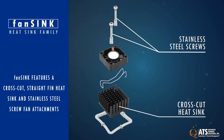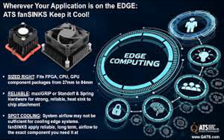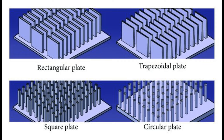Thermal management often involves the integration of active cooling systems, such as fans or pumps, to enhance heat dissipation. These systems help improve airflow and circulation within the device, enhancing cooling efficiency. Design optimization is also key, requiring careful considerations including component placement, enclosure design, and airflow optimization. Well-designed layouts can promote better heat dissipation and airflow, improving overall thermal performance.